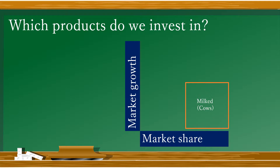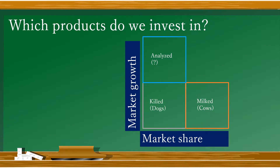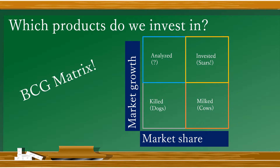Our high growth products are a little more tricky, so we need to analyze them further — let's call those question marks. Our products that aren't doing well in either criteria should be killed; let's call them dogs. Finally, our star products doing everything right should be invested in. And you guessed it — we just made a BCG matrix.